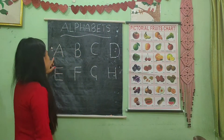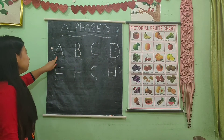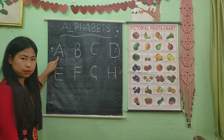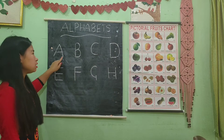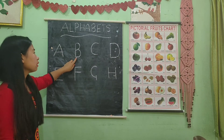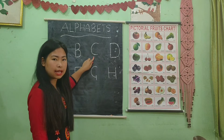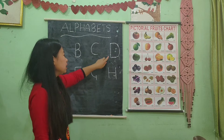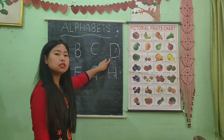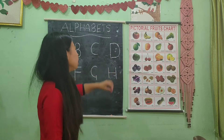Now, look at the board, children. Stay with me. A for apple. Very good. B for ball. C for cat. D for dog. Very good.